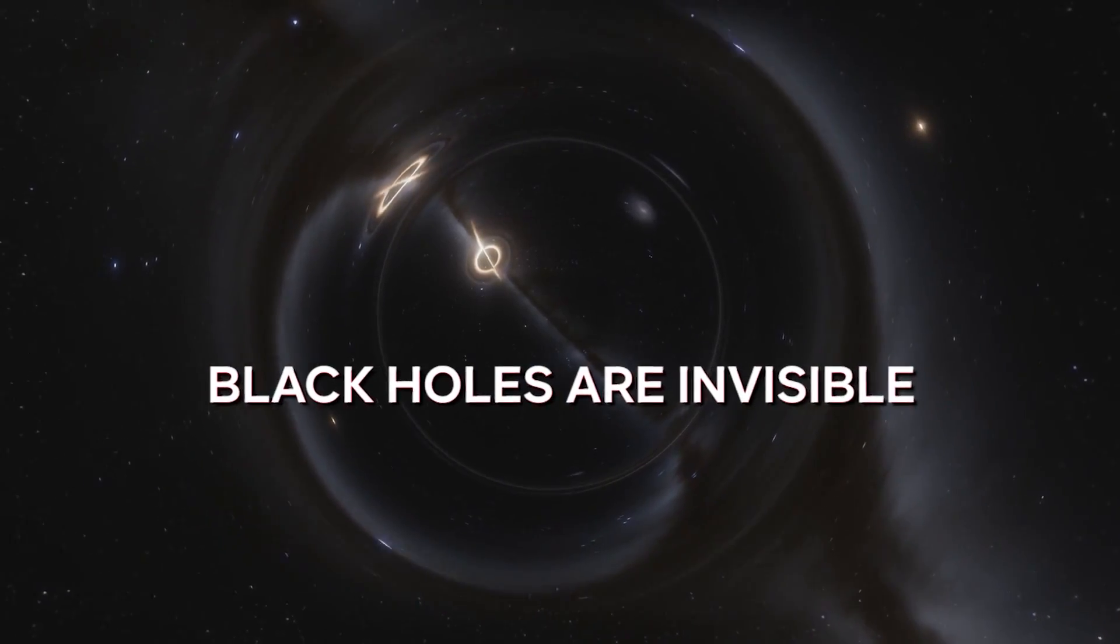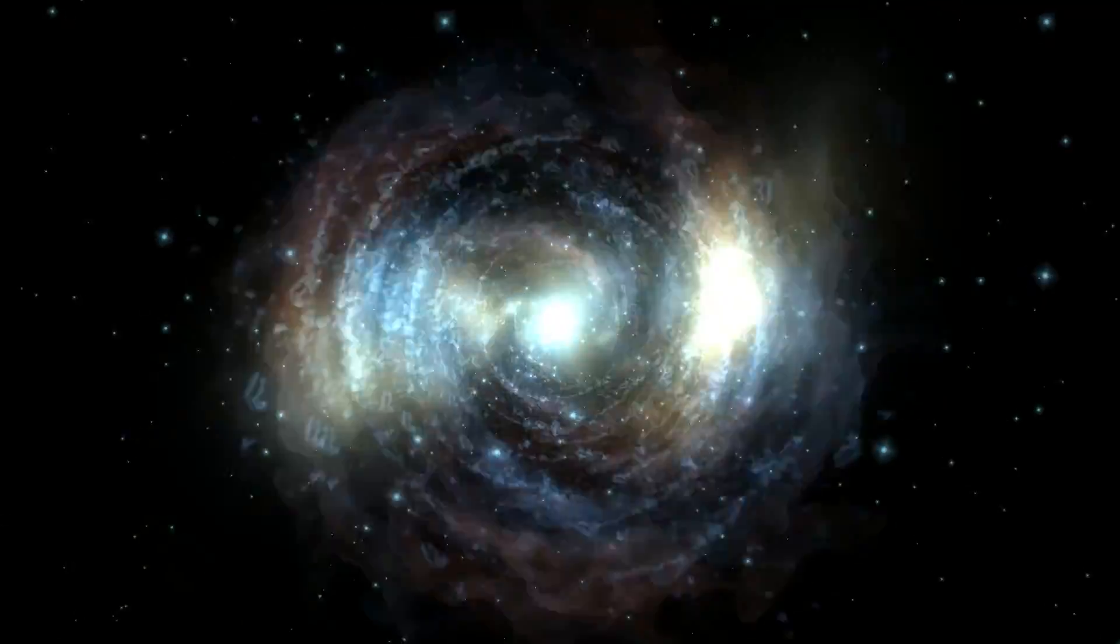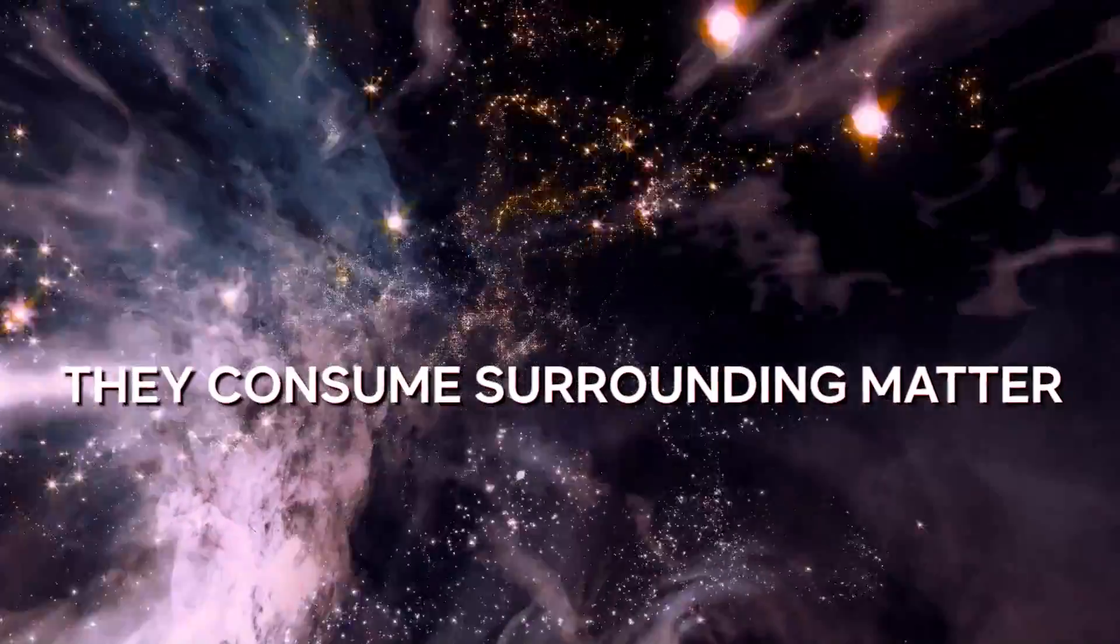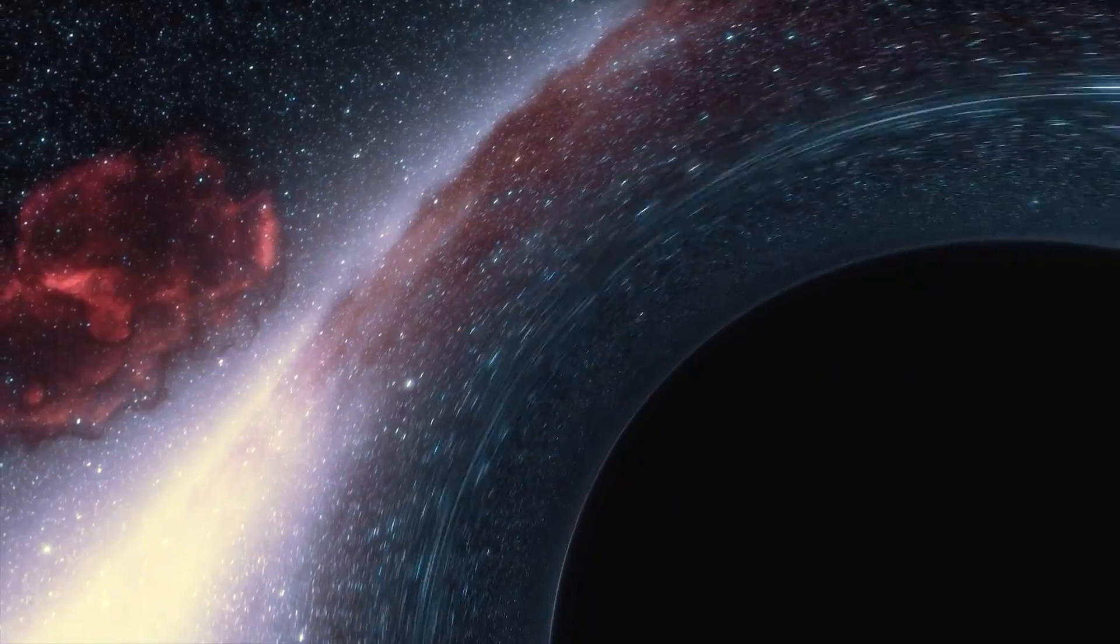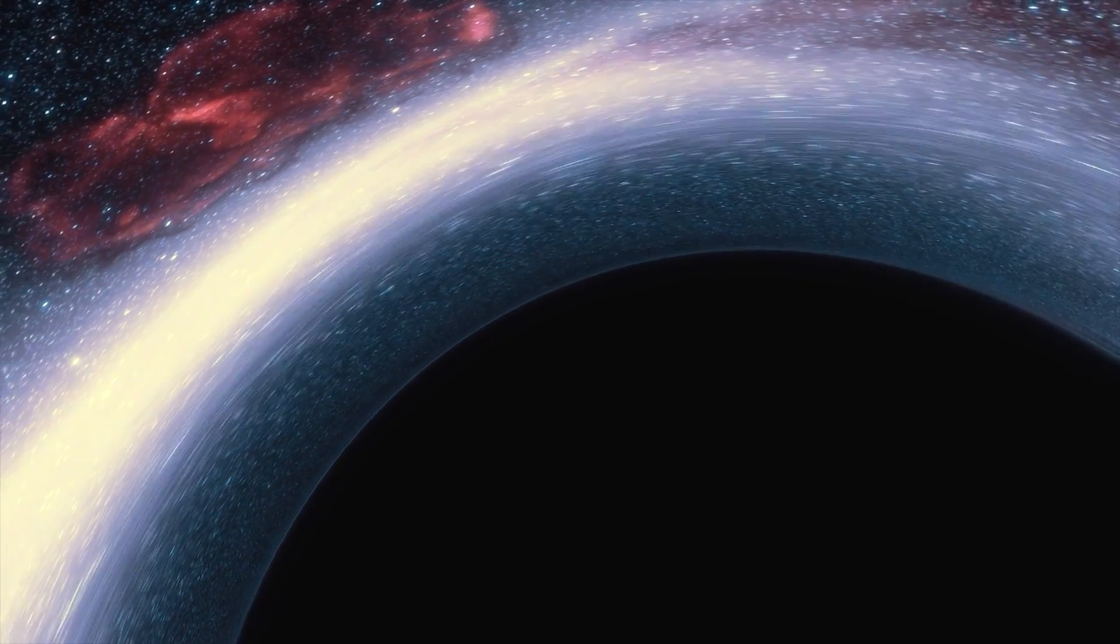Black holes are invisible as light can't escape them, making detection challenging. However, they can be inferred through the radiation emitted as they consume surrounding matter. Supermassive black holes can be obscured by surrounding dust and gas, but sometimes ejected materials provide us with clues about their presence, even as they stay hidden.